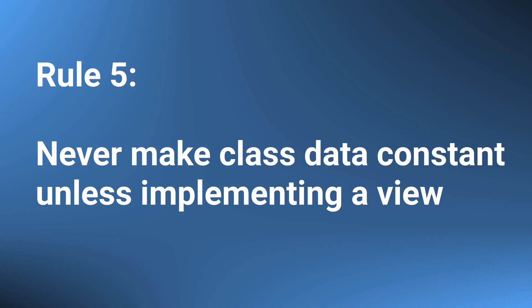Anyway, this leads us to our last rule of const correctness — rule number 5: never make class data const unless it is a const reference to an object when you're implementing a view over that object. There is a slight caveat: we can and should mark class static data const, but we'll talk about that some other time.